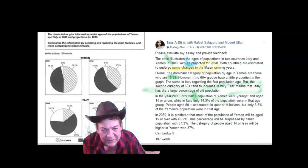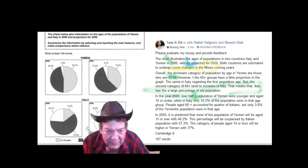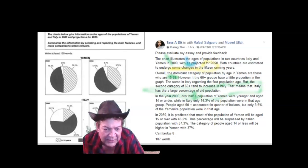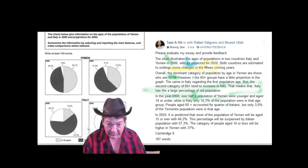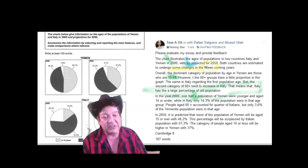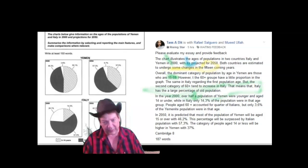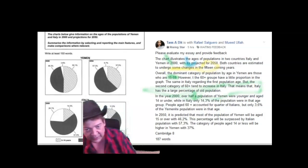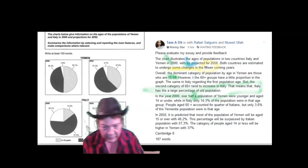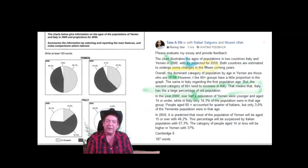Now they're not in competition. They'll be surpassed by Italian population with 57.3. It's not surpassing. The percentage will still be higher in Italy with 57.3%, 60 and older. The category of people aged 14 or less will be higher in Yemeni with 37.3%. It will be higher than in Italy.